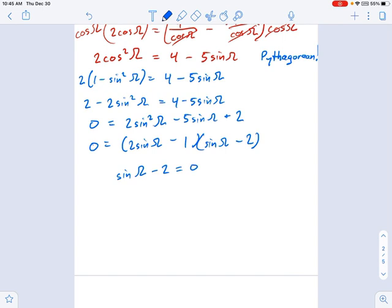So now I have two equations. Sine omega minus 2 equals 0. And that leads me to this. Sine omega equals 2, which is not possible. That's a DNE, an extraneous solution. It is outside the range of the sine function. You can't get something bigger than 1 when you take the sine of an angle.